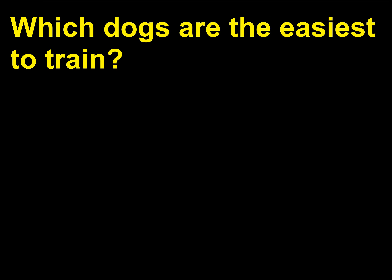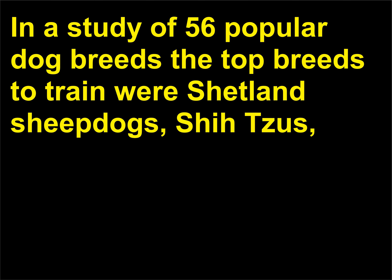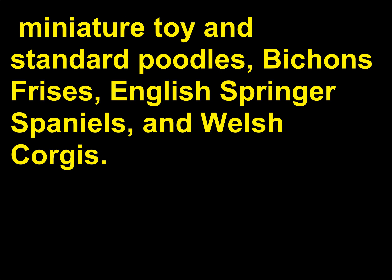Which dogs are the easiest to train? In a study of 56 popular dog breeds, the top breeds to train were Shetland sheepdogs, miniature, toy, and standard poodles, Bichons frisés, English springer spaniels, and Welsh corgis.